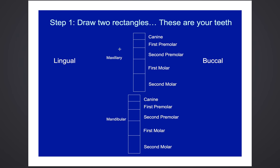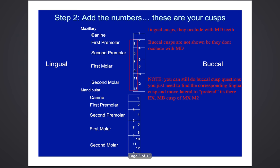Step two, we're going to add some numbers — this is lingual, this is buccal. These numbers are going to represent your cusps: one, two, three, four, five, etc., coming right down here. This is the maxillary. I drew a box around all of these because these represent your lingual cusps, and the lingual cusps will occlude with the mandibular teeth. These numbers do not represent the buccal cusps — they show how the lingual cusps on the lower teeth are interacting with the upper arch.